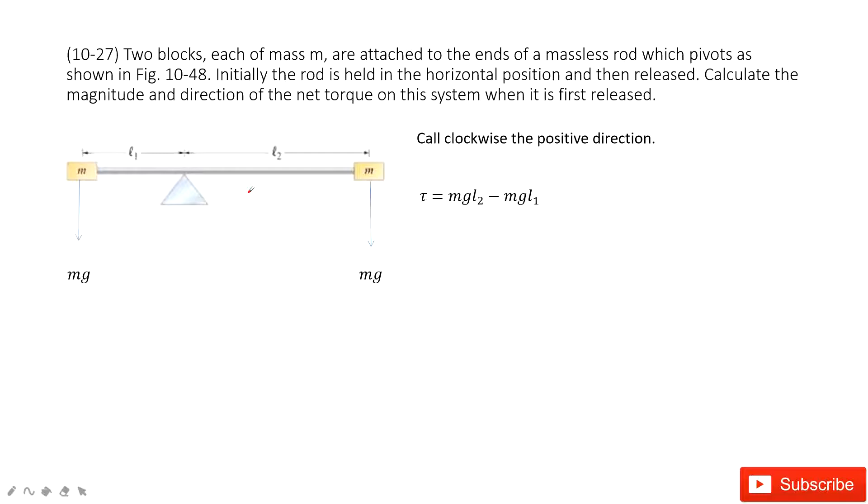In this model, you can see we have two masses, M and M, identical masses at different distances from a fixed point, L1 and L2.